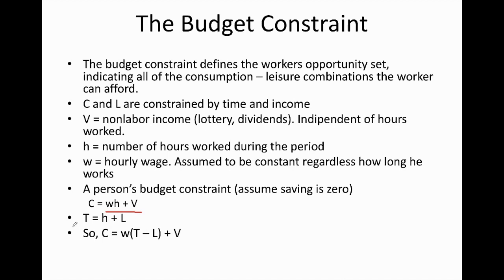We also mentioned that apart from the income constraint, there is also a time constraint available to the worker. Capital T indicates the total time, equal to hours worked H plus L, capital L for leisure. So this gives us the total time for this worker.